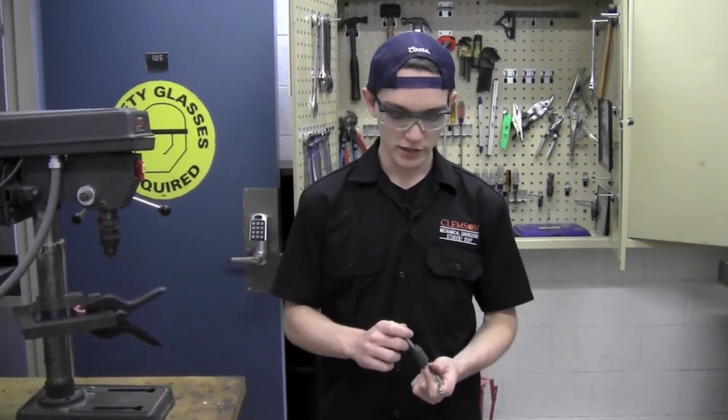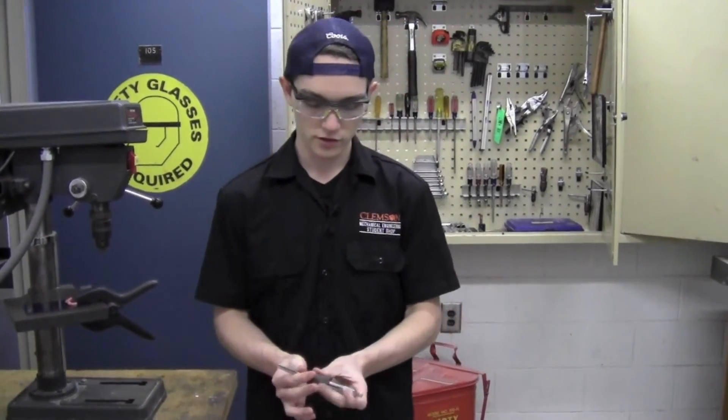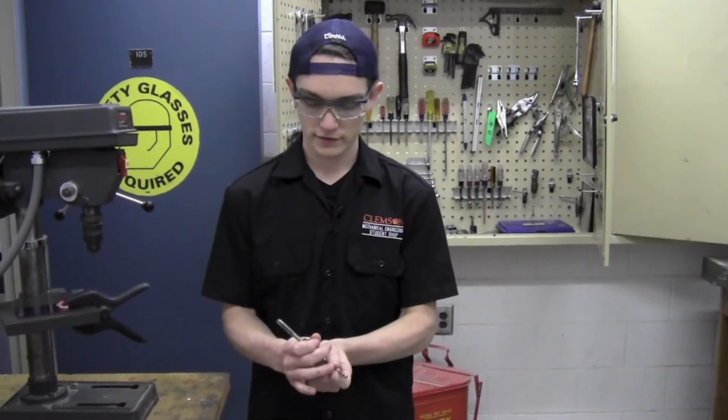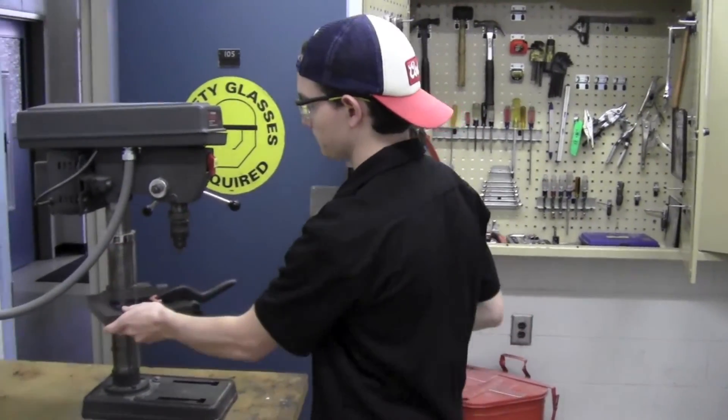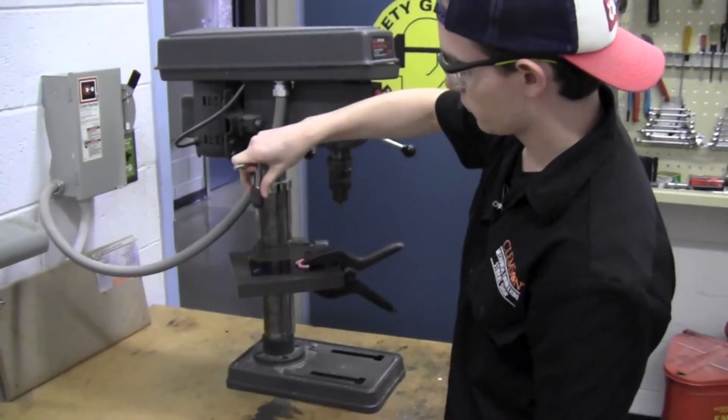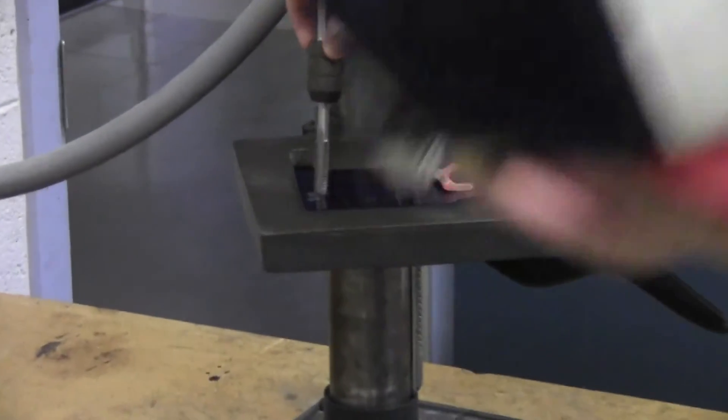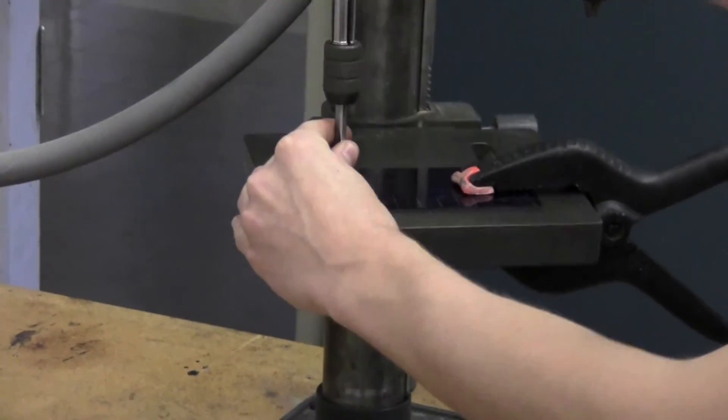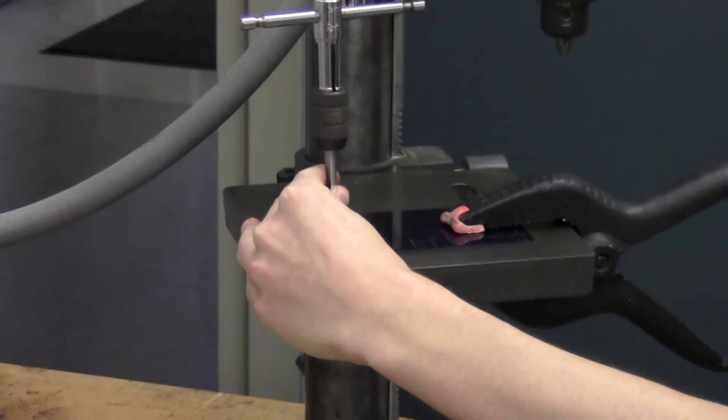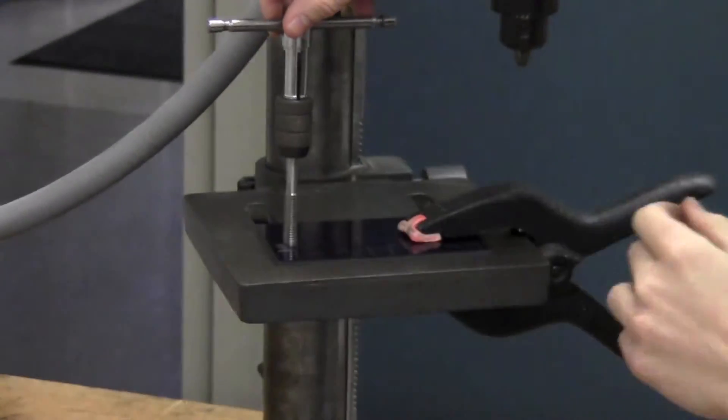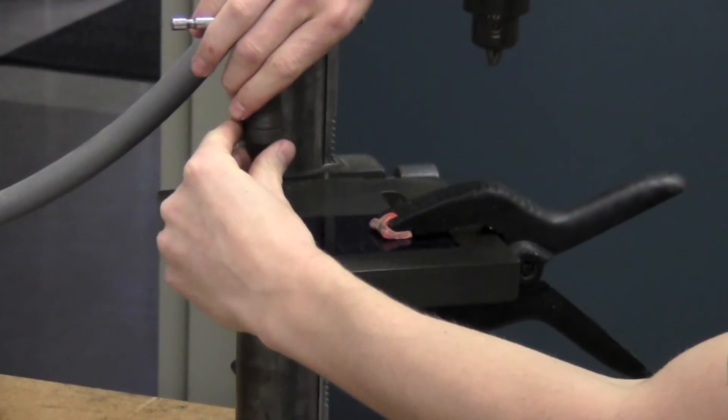You'll take your tap and put it in the tap handle and secure it. Now you're ready to begin tapping the hole. You want to try and ensure that you're coming down into this hole as vertically as possible. So check it and verify that. And then you'll apply some pressure and twist.